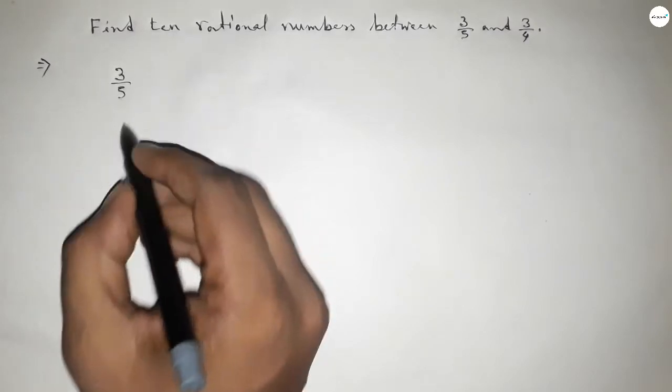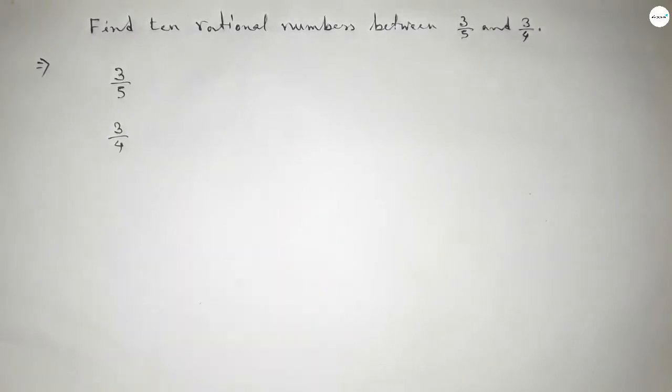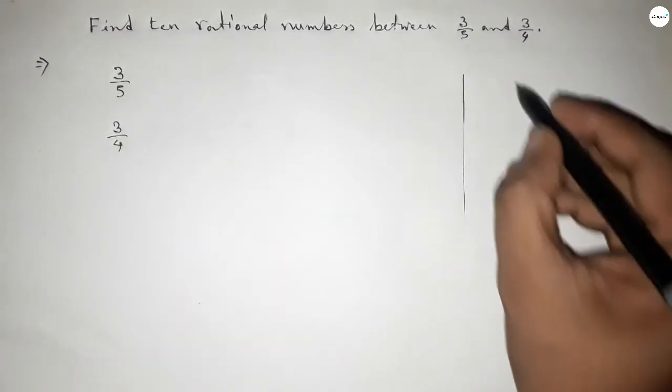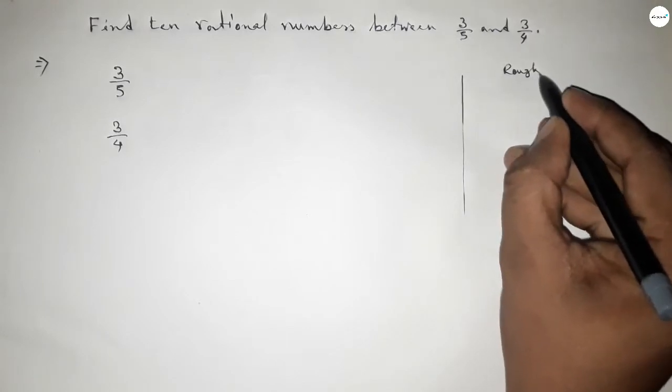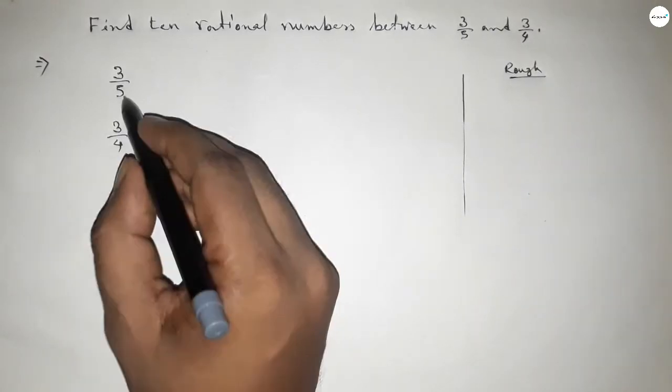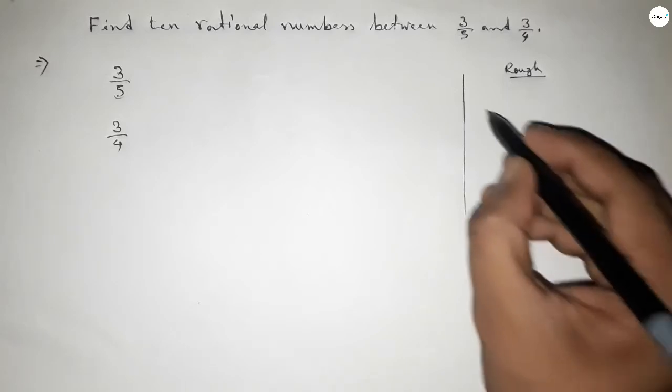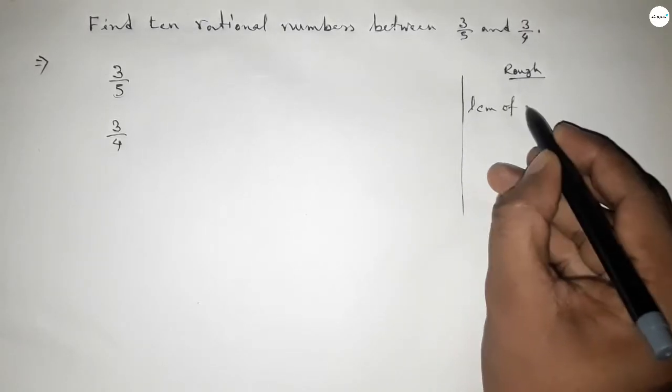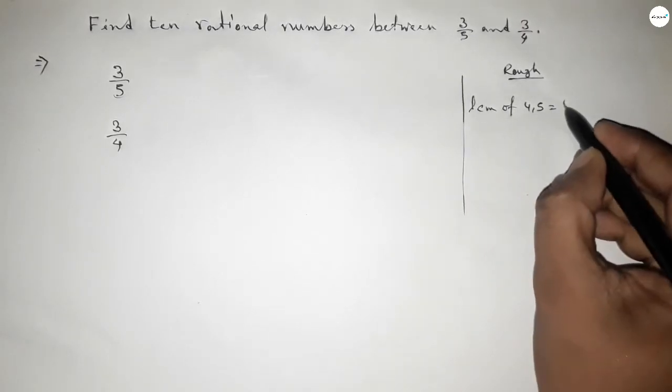Now roughly discussing some important calculation here. The denominator of both are not equal, so first we have to find out the LCM of 4 and 5, and their product is the LCM.